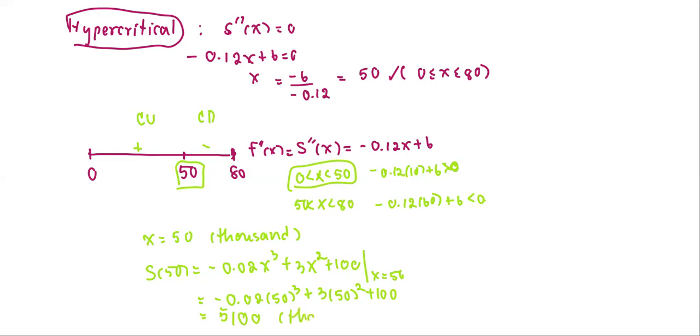So in the ordered pair, it's going to be (x, S(x)), or (50,000, 5,100,000) as the sales.